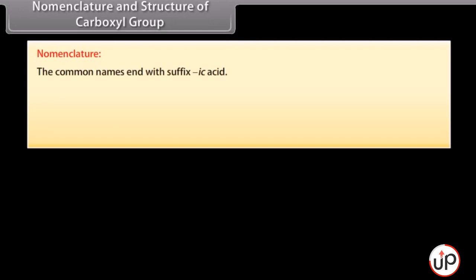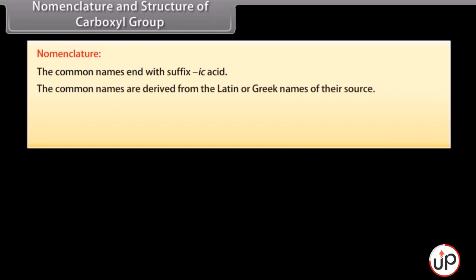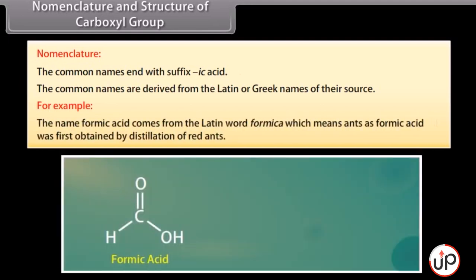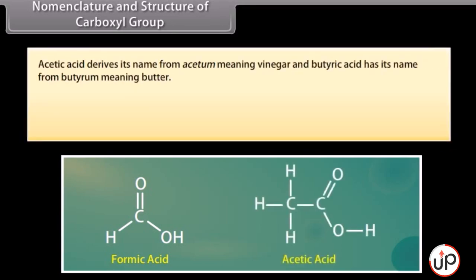Nomenclature: the common names end with the suffix -ic acid. The common names are derived from the Latin or Greek names of their source. For example, the name formic acid comes from the Latin word 'formica' meaning ants, as formic acid was first obtained by distillation of red ants. Acetic acid derives its name from 'acetum' meaning vinegar, and butyric acid has its name from 'butyrum' meaning butter.